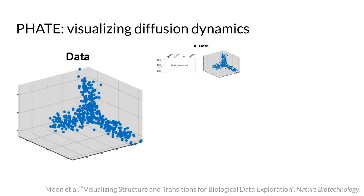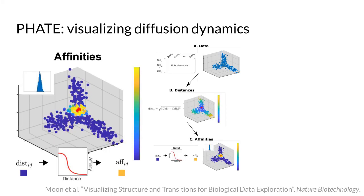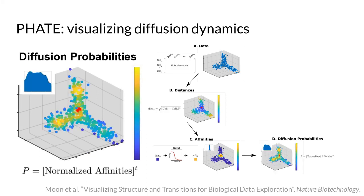First, I will briefly introduce FATE, a dimensionality reduction algorithm recently published in Nature Biotechnology. FATE is a kernel method. It converts distances to affinities using an adaptive bandwidth Gaussian kernel. These affinities are converted to transition probabilities and diffused to build a globally connected manifold.